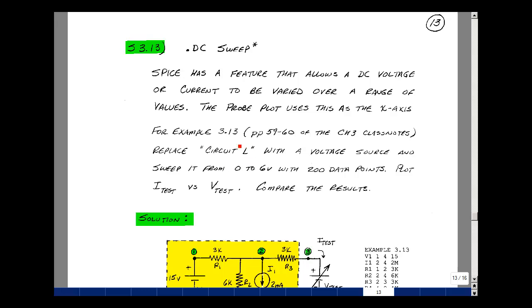So we're going to remove the load which is called circuit L and put a voltage source there and then vary it for both circuits and show that I get the same results. Let's just go from 0 to 6 volts and let's put at least 200 data points on the screen so we get a nice smooth plot.